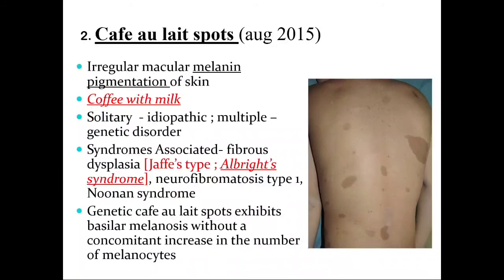A short note can be asked on café au lait spots. It is a macular irregular melanin pigmentation seen on the skin, resembling a coffee with milk appearance. It is associated with syndromes such as Jaffe's type, Albright's syndrome, Neurofibromatosis type 1, and Noonan syndrome. It may be solitary, idiopathic, or multiple, and is also found as a genetic disorder — the genetic café response is basal melanosis without a concomitant increase in the number of melanocytes.